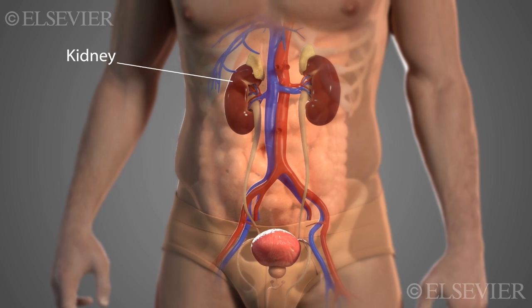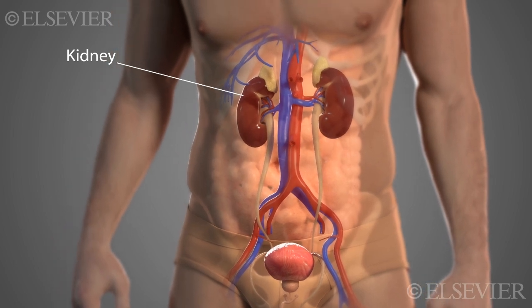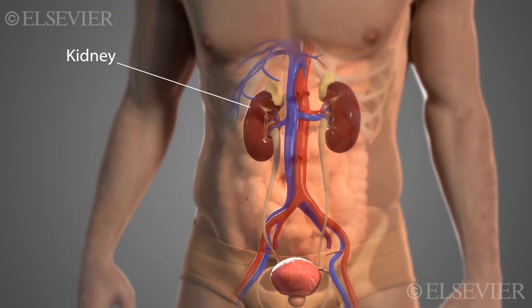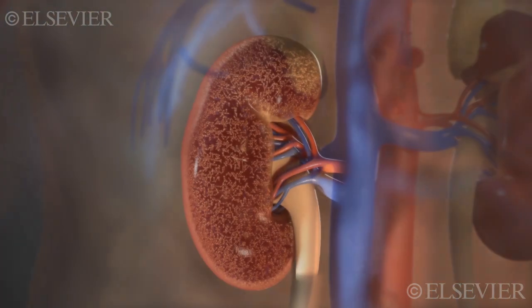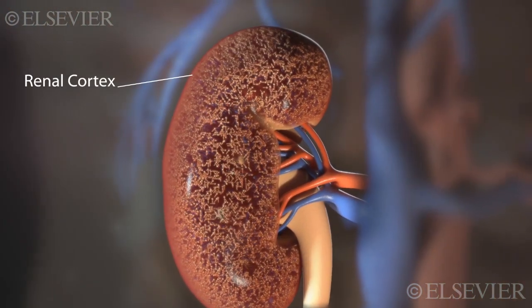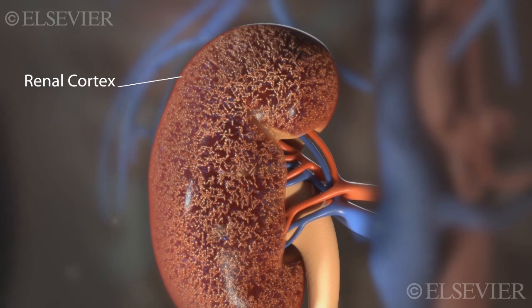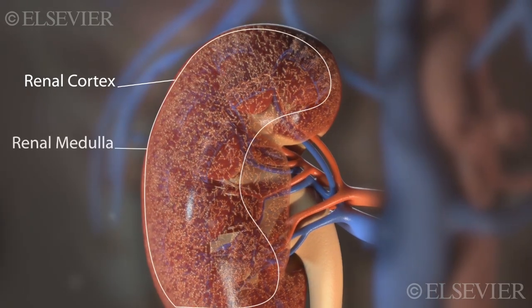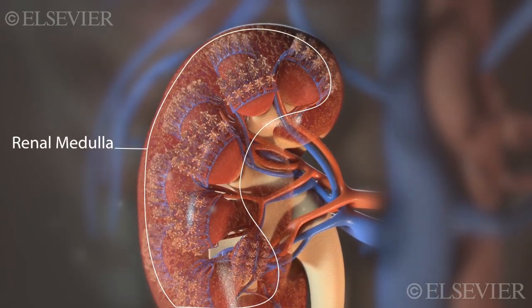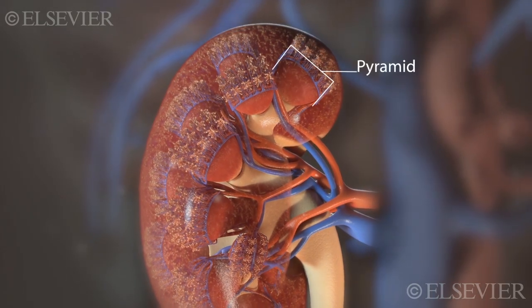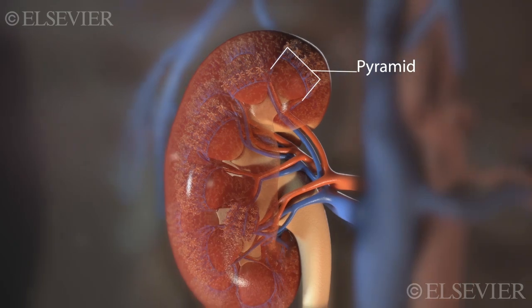The kidney consists of two major parts. The outer part is called the cortex, and the inner part is called the medulla. The medulla is made of pyramids, which are distinct triangular wedges.